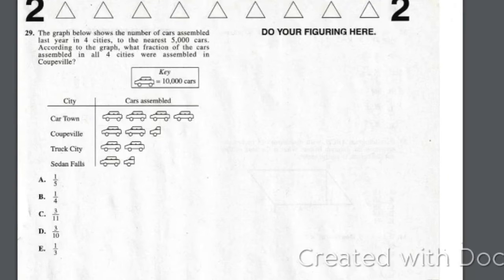All right, so this is 10,000 cars. 10,000, 20,000, and then 10,000, 20,000, and then what, 25,000?